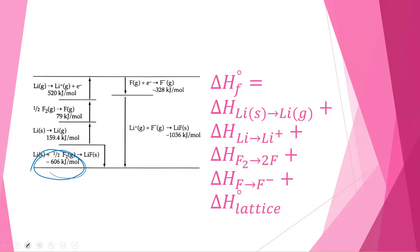So in this case, our enthalpy of vaporization is going to be positive. Our enthalpy of ionization is going to be positive. Our breaking of that fluorine-fluorine bond is positive. But then the ionization of the fluorine is going to be negative, and the lattice enthalpy is also going to be negative.